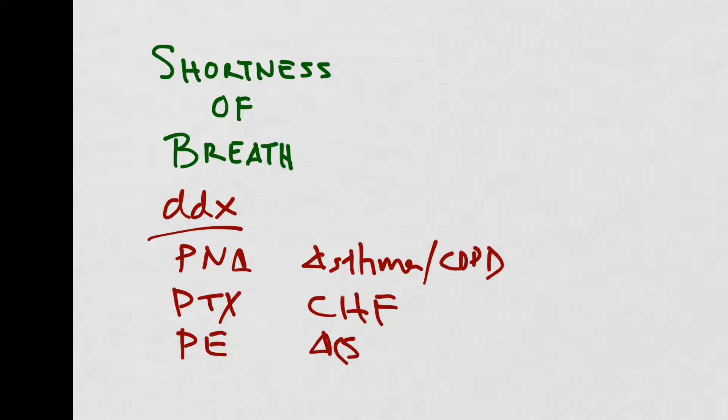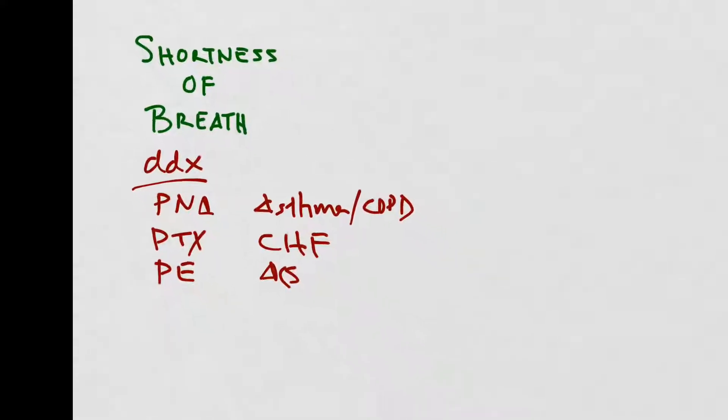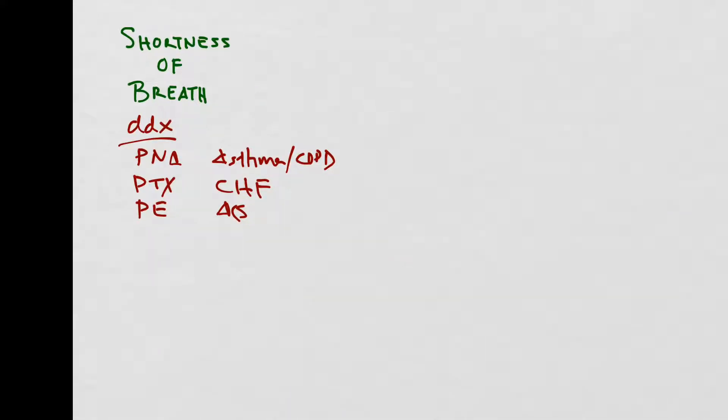So now that you've thought about your critical differential, the next step is to actually walk over to the patient and see how they're doing. So like all things in medicine, shortness of breath is a spectrum, where your patient can be in either mild, moderate, or severe respiratory distress. Figuring out where on the spectrum your patient is is really important because it'll guide your initial resuscitative steps.